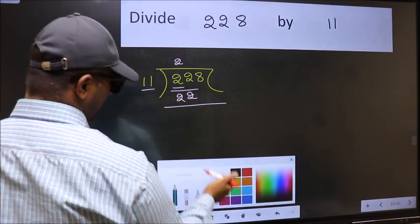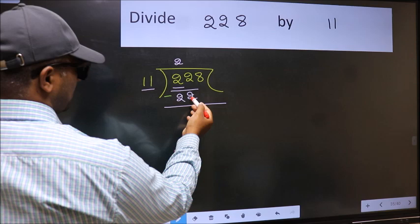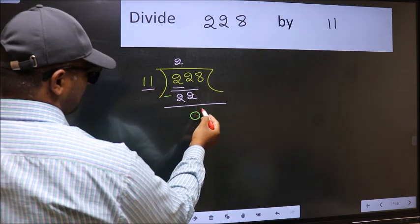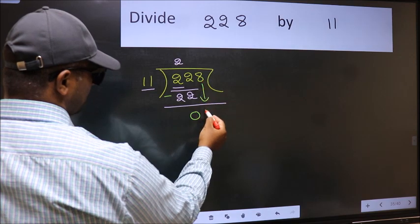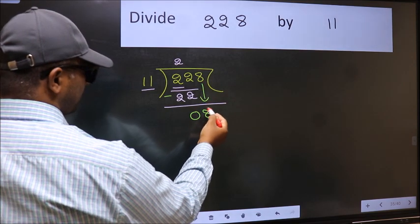Now you should subtract. 22 minus 22 is 0. After this, bring down the beside number. So 8 down.